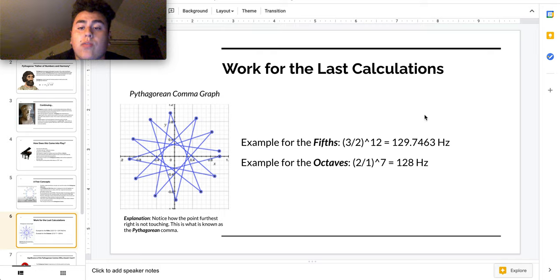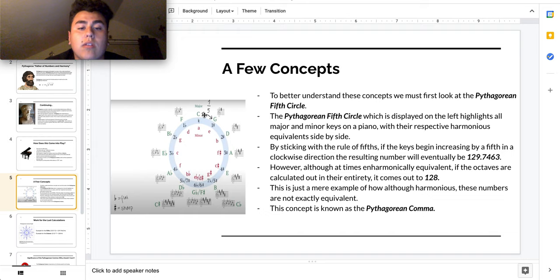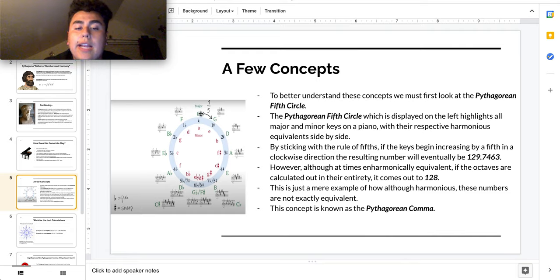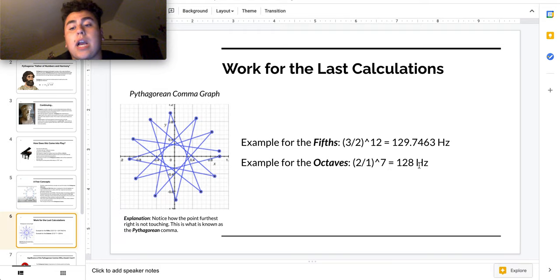So right here, here's the work for the last calculations. So for the fifths, we have a 3 to 2 ratio to the 12th power. This is due to the fact that if you count these numbers again, there is 12 around. So we're going to be going by a fifth in the right direction. And that's how you end up getting 129.7463 hertz. And for the octaves, you go in a counterclockwise position. And instead of counting each flat and sharp note around all 12, you're going to instead use the seven octaves because that's the max that are on the piano. So by doing that, you end up using the two to one ratio, you end up getting 128 hertz. Obviously, there's a little tiny deviation right here, which doesn't make it inharmonically equivalent, although it sounds like it is.